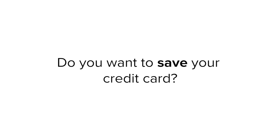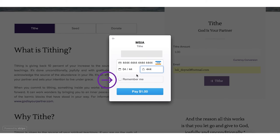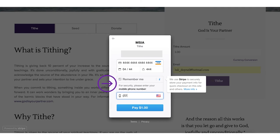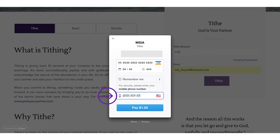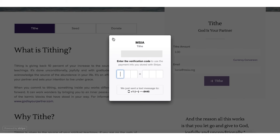Do you want to save your credit card? If so, you will need to use your cell phone and receive security text messages to use the Remember Me function. Click on Remember Me. Enter your cell phone number and click on the button below. Check your cell phone for the verification code text. Enter your 6-digit verification code and complete your payment.